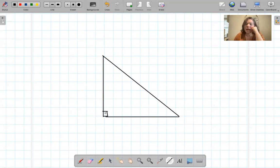This is 90. And let's say, I don't know. Let's say, X and 60. So I know 90 plus 60 plus X equals 180. So X equals 30 degrees.